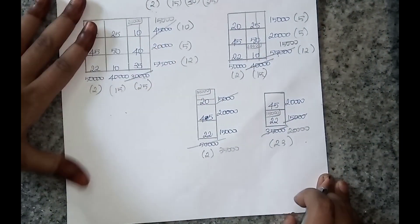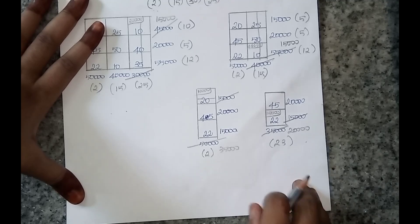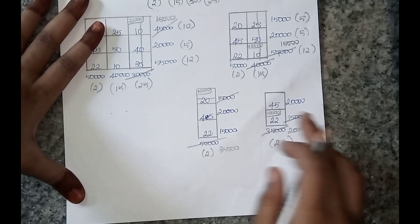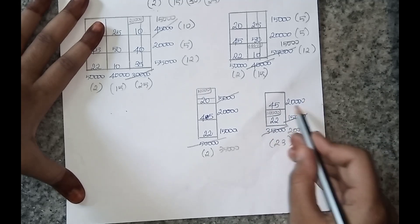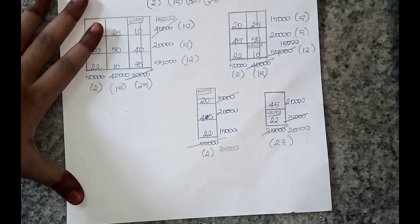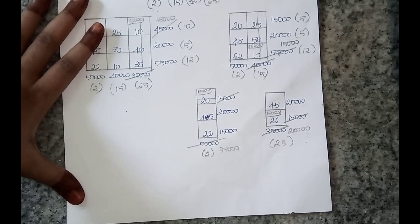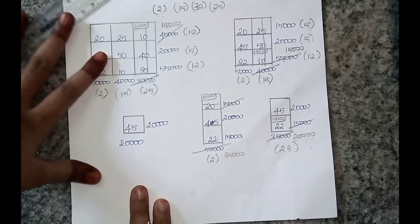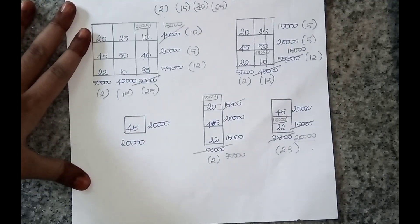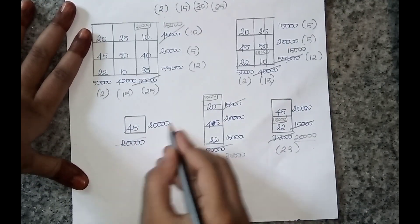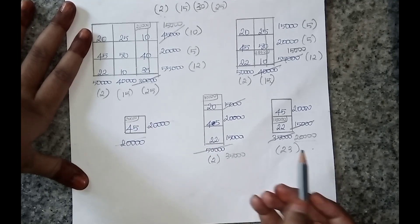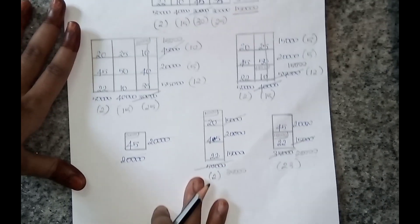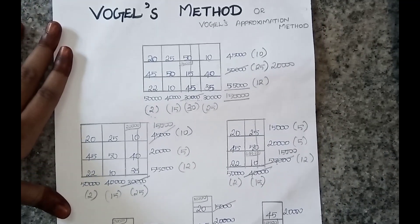Now we can verify that the steps we did are correct, because the remaining demand and supply is 20,000. Write the final allocation of 20,000 to confirm each step is correct.